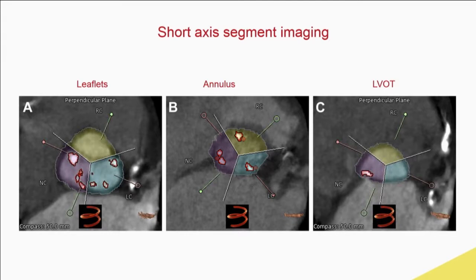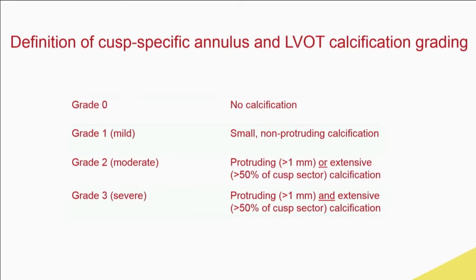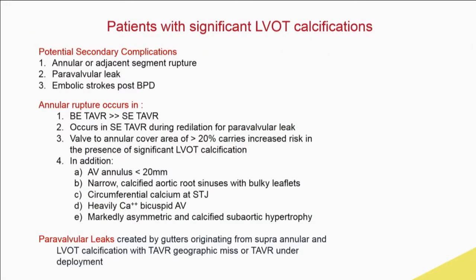You can take this in short axis, and most methods for semi-quantitation look at calcium as it relates to the three cusps across three different dimensions — at the leaflet level, annulus, and LVOT level. The moderate and severe grades in this semi-quantitative scheme are extension into the LVOT by at least one millimeter, greater than 50% of a segmental region, or both if severe. Those are things to keep your eye on.